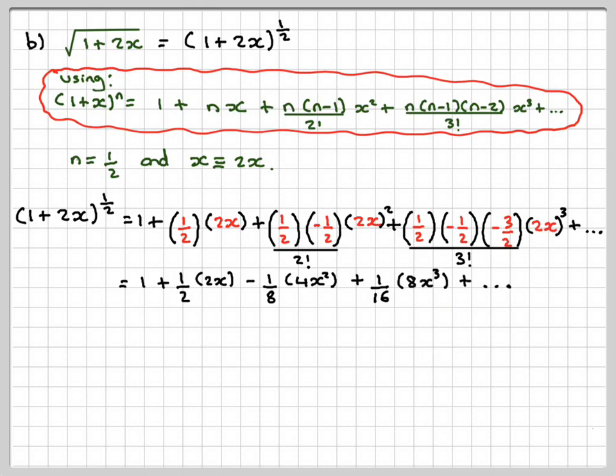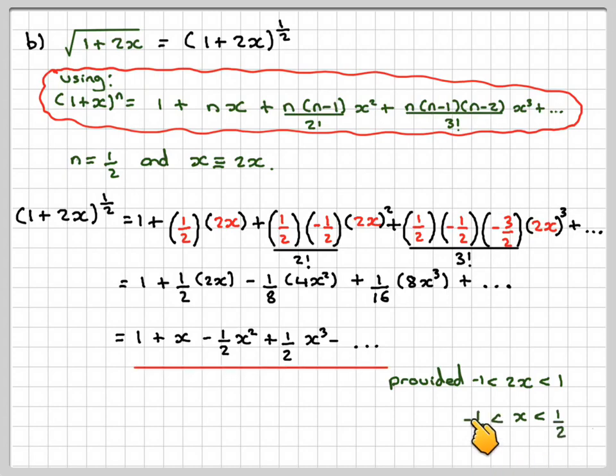Carrying on, we're going to get 1. 1 half times 2 is going to be x. Minus an eighth times 4 gives me minus a half x². And then plus 1 sixteenth times 8 gives me plus a half x³. Now it's valid if 2x is between minus 1 and 1, which means that x will have to be between minus a half and a half.